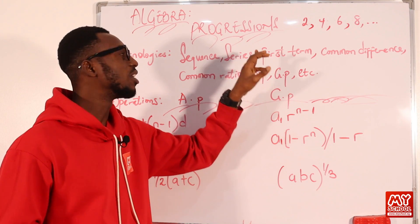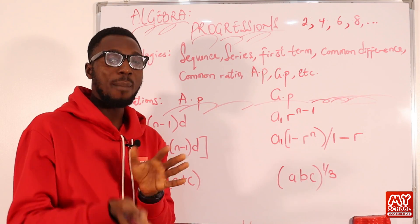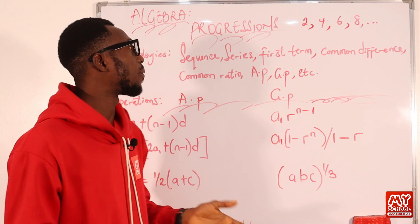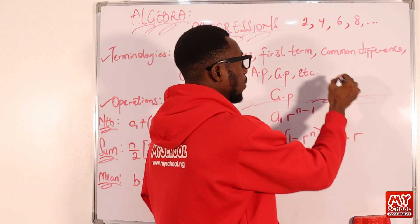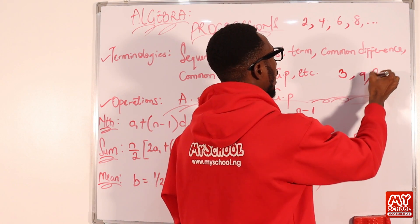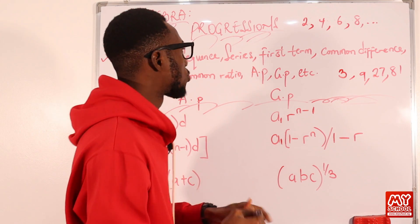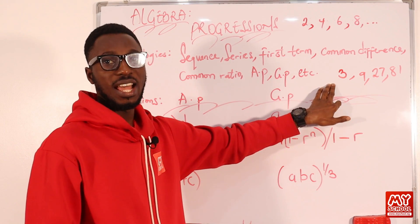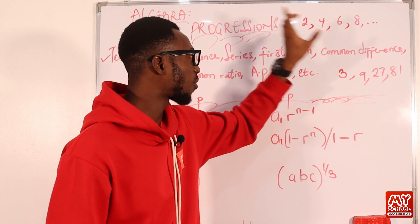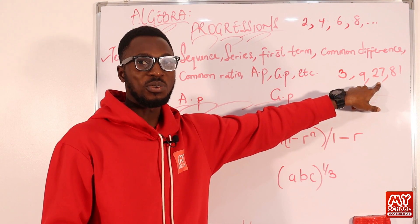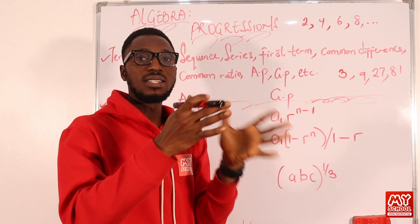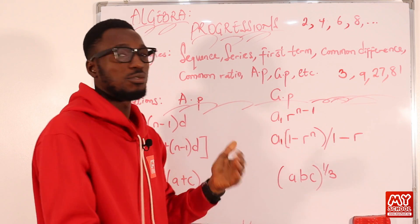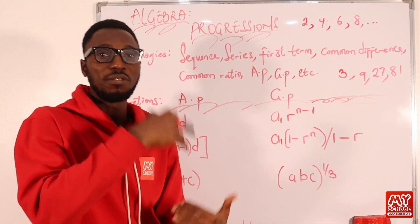In GP — geometric progression — you are looking at a kind of sequence whereby the terms increase or decrease by a particular constant, which is the common ratio. For example, I have 3, 9, 27, 81. This is a GP. To get the next item, I multiply the previous term by the common ratio, which is 3. So 3 times 3 is 9, 3 times 9 is 27, and so on. To get back the previous item, I divide by that constant value.